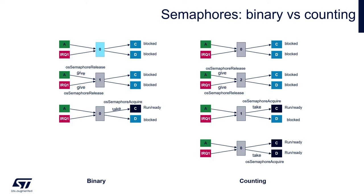If two tasks have the same priority, the semaphore will be taken by the task that has been waiting longer.